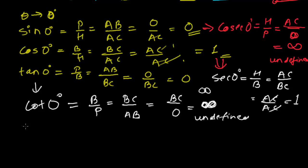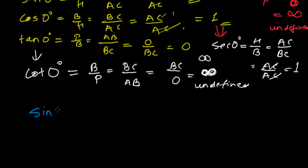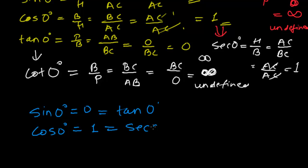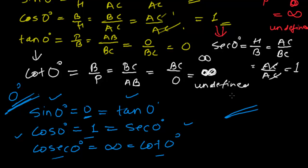We got the values of all trigonometric ratios for zero degree. To sum up: sin zero equals zero, which also equals tan zero. Cos zero equals one, which also equals sec zero. And cosec zero and cot zero both equal infinity — undefined. These are all the values for zero degree. Sin and tan have the same value zero; cos and sec have the same value one; and cosec and cot are both undefined.